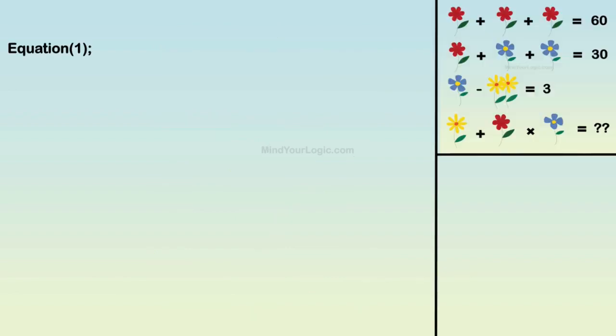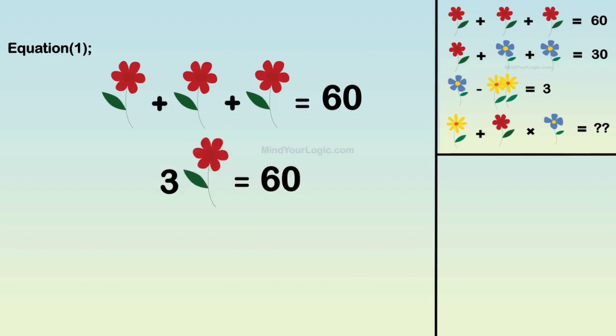Initiating with equation 1. Red flower plus red flower plus red flower equals 60. On simplifying, we get the value of red flower as 20.